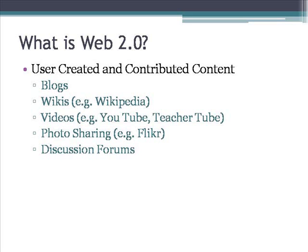Here are some examples of how the average user can contribute content to the Internet without needing advanced computer or programming skills. They can do so through blogs, through wikis — which are editable web pages, the largest example being Wikipedia — through videos on sites such as YouTube or TeacherTube, on photo-sharing sites such as Flickr, or through discussion forums.